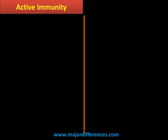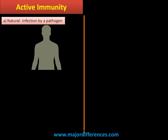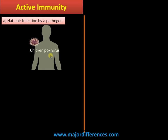Active immunity may be natural or artificial. Natural active immunity is induced by infection by a pathogen. Suppose a pathogen enters the body — the body's immune response is actively engaged in producing specific antibodies against this pathogen, which constitute the active immunity.